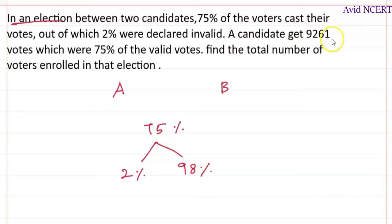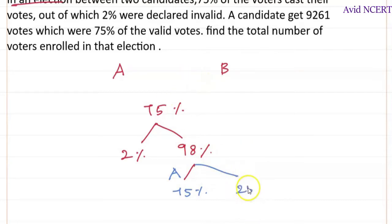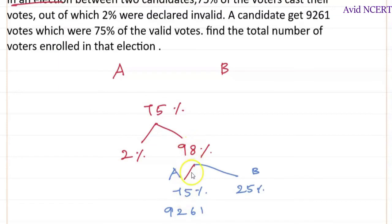Candidate A got 9261 votes, which were 75% of the valid votes. So A got 75% of the valid votes, and B got only 25%. The 9261 votes represent 75% of the valid votes, which is 75% of 98% of the total votes cast.